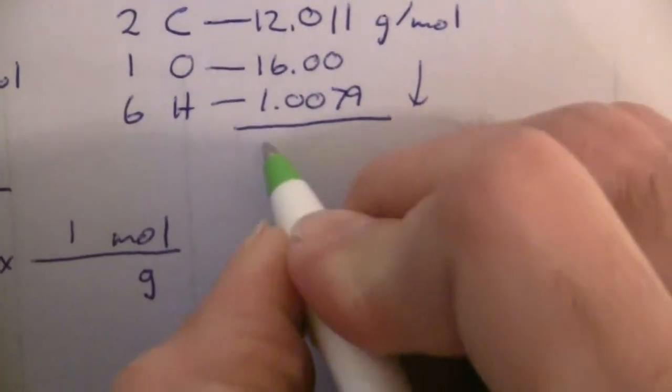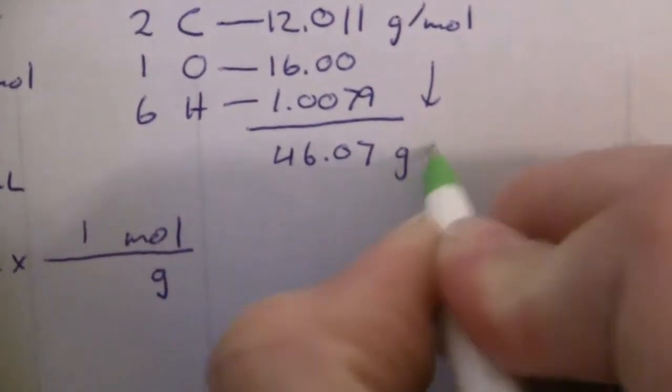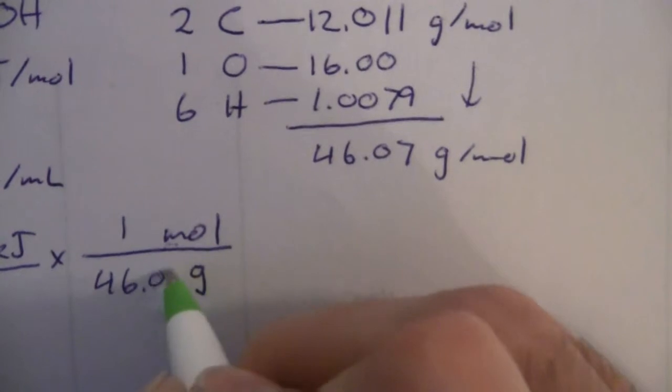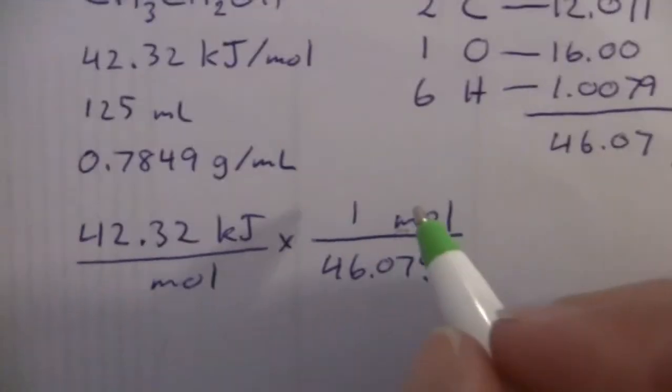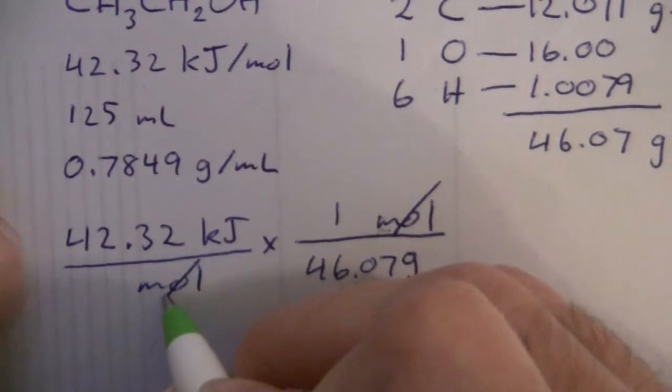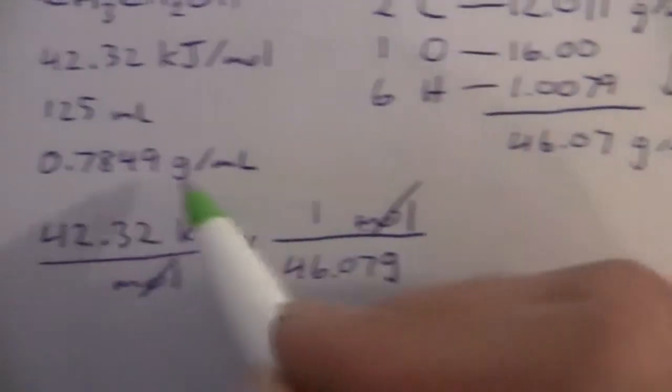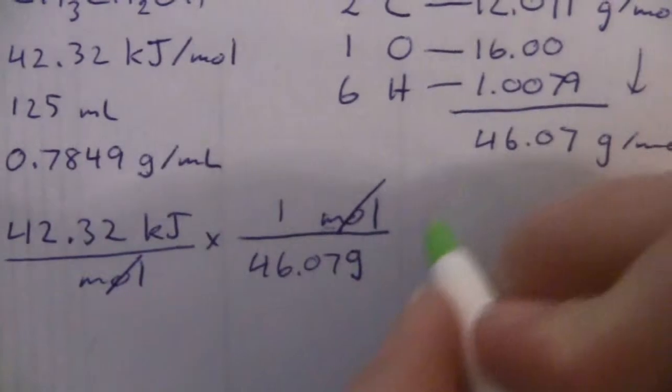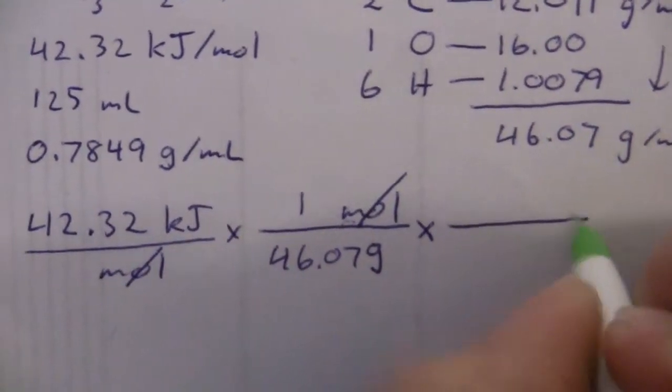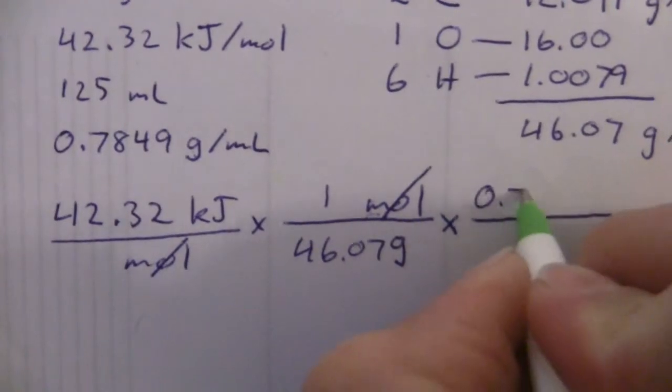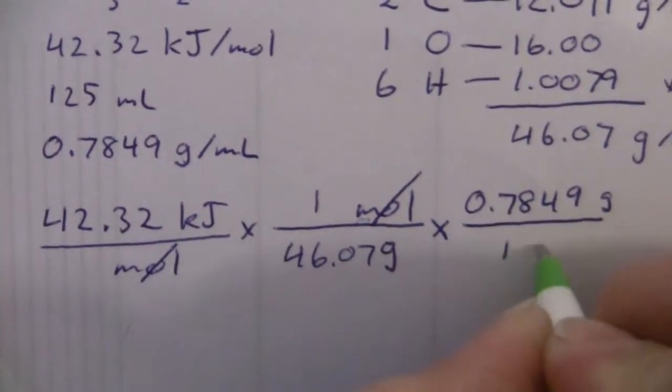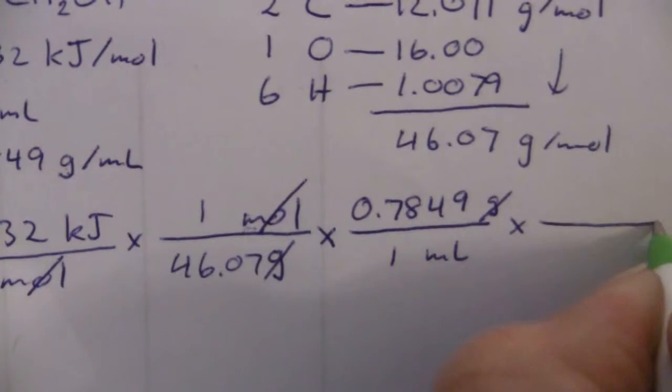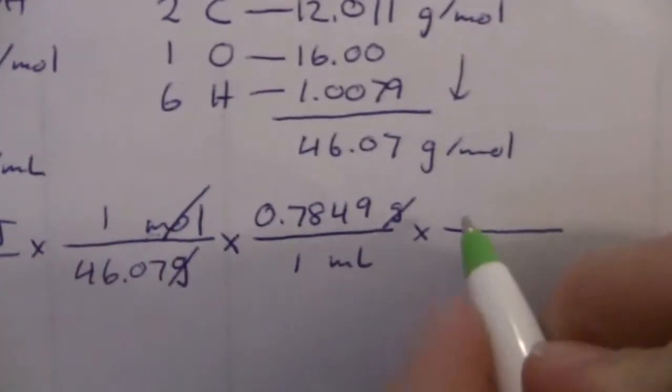So that is the value we're going to use here: 46.07 grams per mole. Set up so that the moles will cancel. Now we need to get rid of the grams. We have that in our density, so we can convert to milliliters and then we can clear out the milliliters in the end. So 0.7849 grams to one milliliter. Cancel the grams. And then we have 125 milliliters.